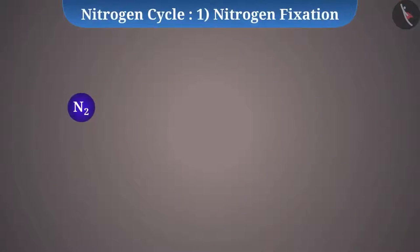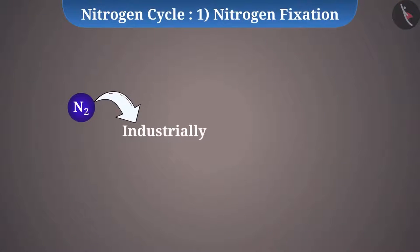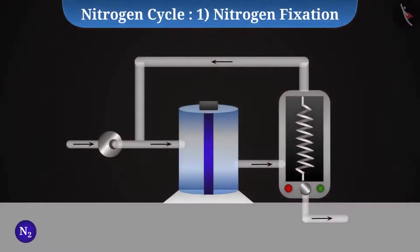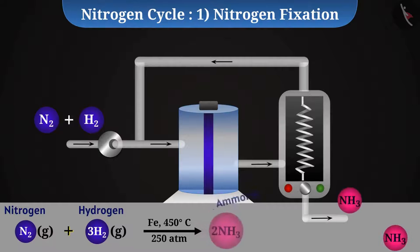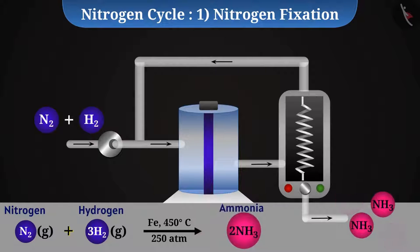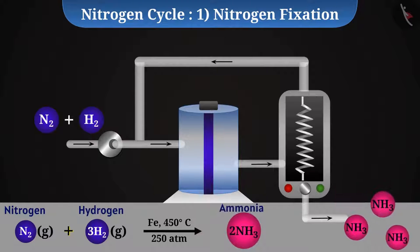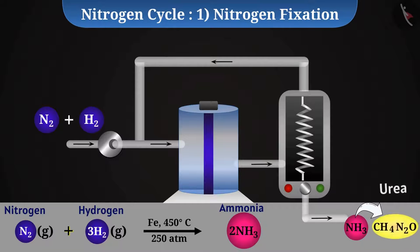Nitrogen can also be fixed industrially. For example, nitrogen is combined with hydrogen at high temperature and pressure to obtain ammonia, which is later converted into various fertilizers such as urea.